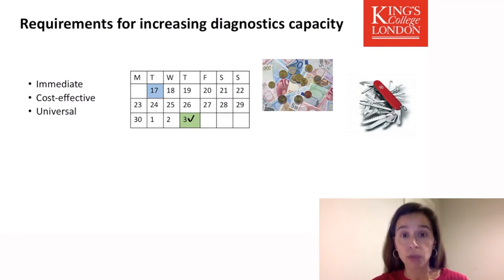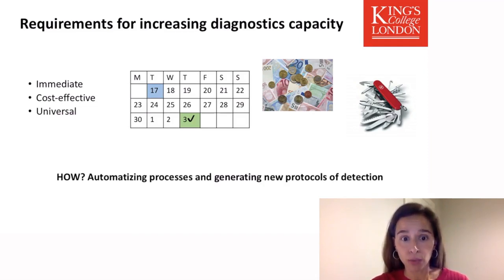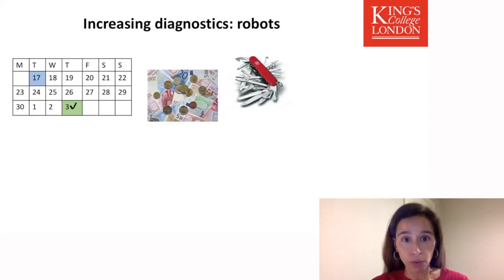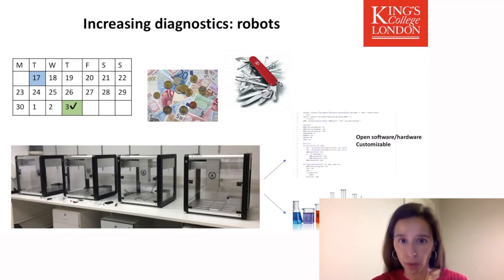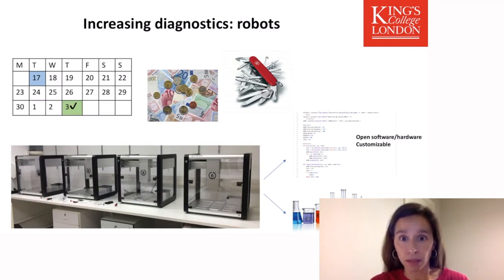We needed something that was available immediately, cost effective, and universal so that many labs could use it. To increase diagnostics capacity using automatization and creating new protocols for detection of SARS-CoV-2 — with regards to robotics, we needed something available, affordable, flexible, and usable by different users. This is why we opted for a company called Opentrons, because these robots are open software and hardware, and therefore customizable to the needs of every single lab. Because they do not require a set protocol, the user programs them to do the protocols ongoing in the lab, and therefore they can be used by many different labs.